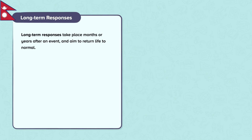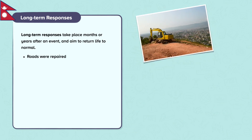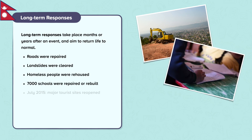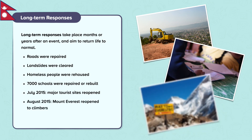Long-term responses take place months or years after an event and aim to return life to normal. Roads were repaired to support the movement of aid, food, water and other supplies. Landslides were cleared and floods were drained. Homeless people were rehoused in new homes or their own homes were repaired. 7,000 schools were repaired or rebuilt. In July 2015 tourism returned after some major tourist sites reopened, and in August 2015 Mount Everest reopened to climbers after repairs were made to Everest Base Camp and trekking routes were re-established.